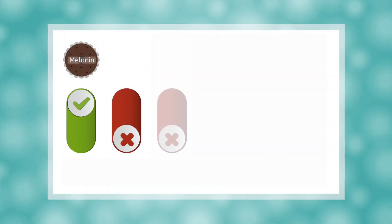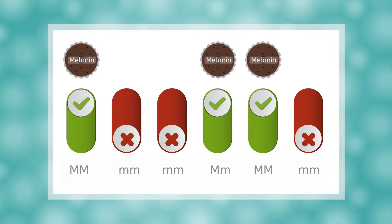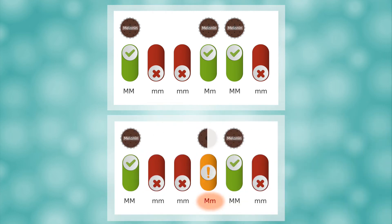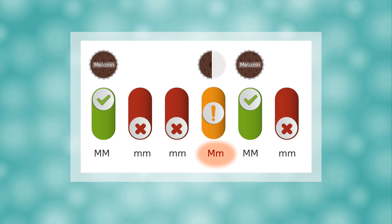You can imagine your melanin genes as being a long line of on and off switches. The more switches that are turned on, the more melanin your cells will produce. Having the melanin allele turns the switch on, and not having the allele keeps it off. Although our switches might actually need a medium setting, because while the allele for melanin is considered dominant, genes with only one melanin allele don't tend to produce as much melanin as genes that are homozygous for melanin production. So its dominance is not complete.